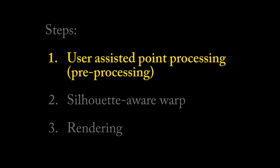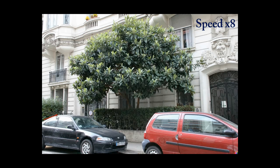We start with a user-assisted point processing step. The user first marks important silhouettes, which help our algorithm handle occlusions correctly. Typically, this takes less than one minute per image.